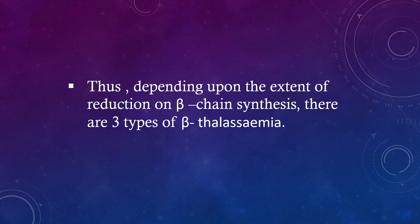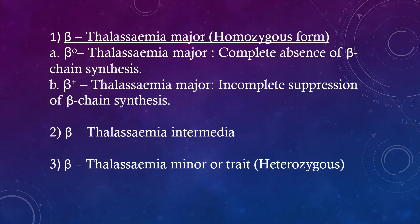Thus, depending upon the extent of reduction in beta-globin chain synthesis, there are three types of beta-thalassemia: beta-thalassemia major (homozygous form) — beta-0-thalassemia major with complete absence of beta chain synthesis, and beta-plus-thalassemia major with incomplete suppression of beta chain synthesis; beta-thalassemia intermediate; and beta-thalassemia minor or trait (heterozygous).